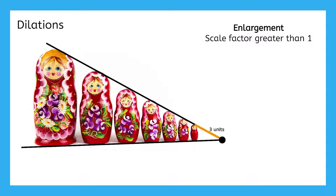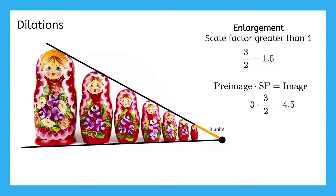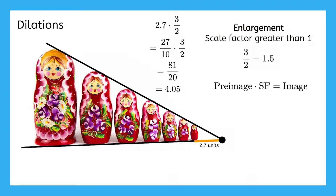Let's explore the enlargement from the smallest doll to the one right next to it — we'll call this second doll our image. We know that the scale factor has to be greater than 1 for this image to be larger than the pre-image. Let's say that the distance from the center of dilation to the top of the pre-image is 3 units, and we're given the scale factor of 3/2, or 1.5. We can use our formula and substitute 3 as the pre-image and 3/2 as the scale factor. When we multiply those, we get 9/2, or 4.5. This tells us that 4.5 is the distance from the center of dilation to the top of the image.